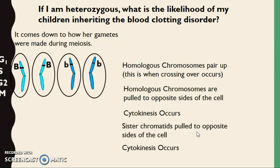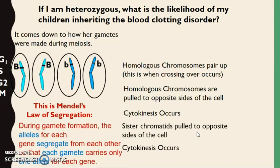The fact that my alleles as a heterozygote separate into gametes is actually Mendel's law of segregation, which states that during gamete formation, the alleles for each gene segregate or separate from each other, so that each gamete carries only one allele for each gene. Therefore, the chance of my child inheriting this is 50%.